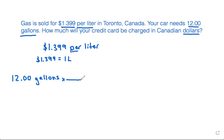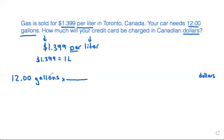We'll put times a fraction, and the answer we want to get is in dollars. So we need to cancel out gallons and get to something in dollars. We have a relationship that gives us dollars and liters, but in order to use this relationship, we need to first convert from gallons to liters, because both gallons and liters are a volume unit.